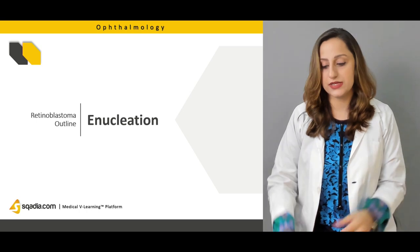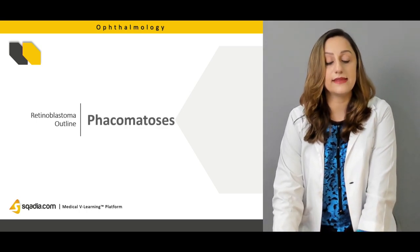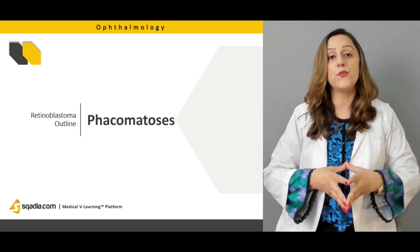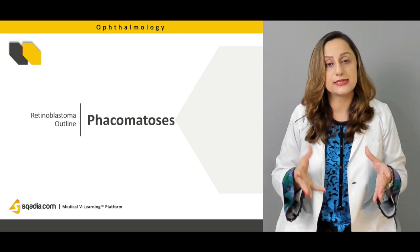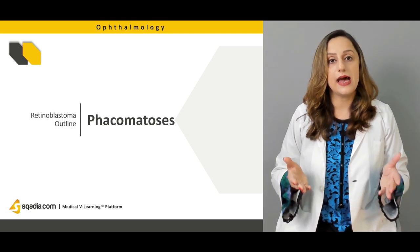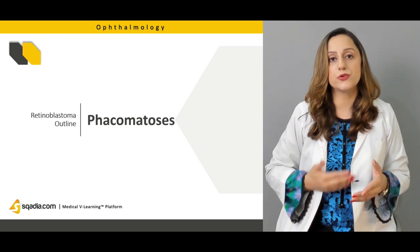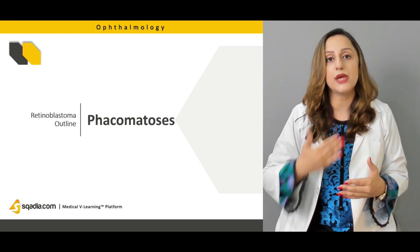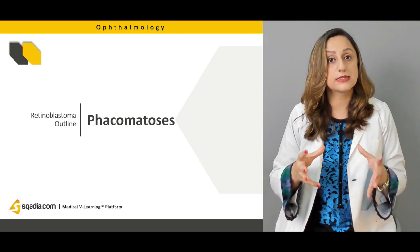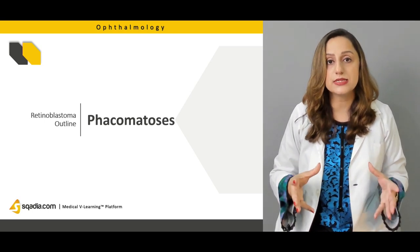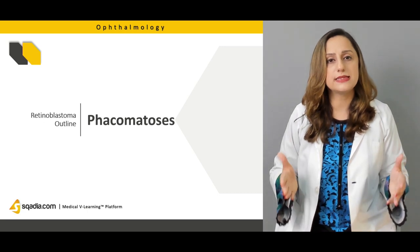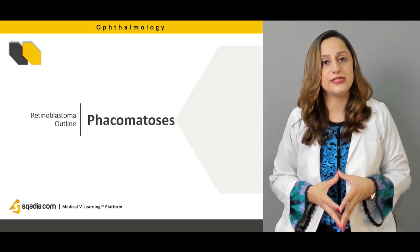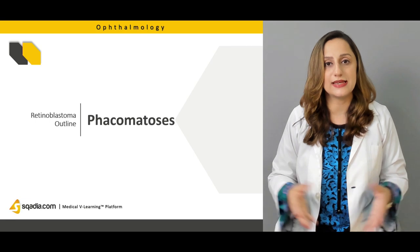We'll then move on to phacomatosis, which is a group of rare syndromic conditions. These are usually ocular, central nervous system, and dermatological conditions — the three major components of phacomatosis. These are typically syndromic presentations with external facial features that are quite characteristic, and one should know how to manage these infants.